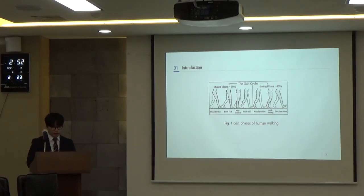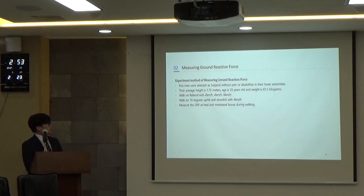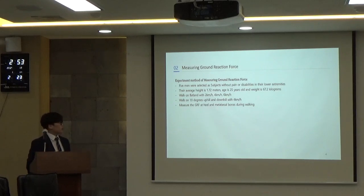To make the toe-attached robot foot, the ground reaction force was measured. To measure the ground reaction force, eight men in their 20s with no pain or disabilities in their lower extremities were selected as subjects. Their average height is 1.72 meters, age is 25 years old, and weight is 67.2 kilograms. Subjects walk on flat land with 2 km per hour, 4 km per hour, and 6 km per hour speed. During walking, we measured the ground reaction force at heel and at the metatarsal bones. Subjects also walked on 10 degrees uphill and 10 degrees downhill with 4 km per hour, and we measured the ground reaction force at heel.